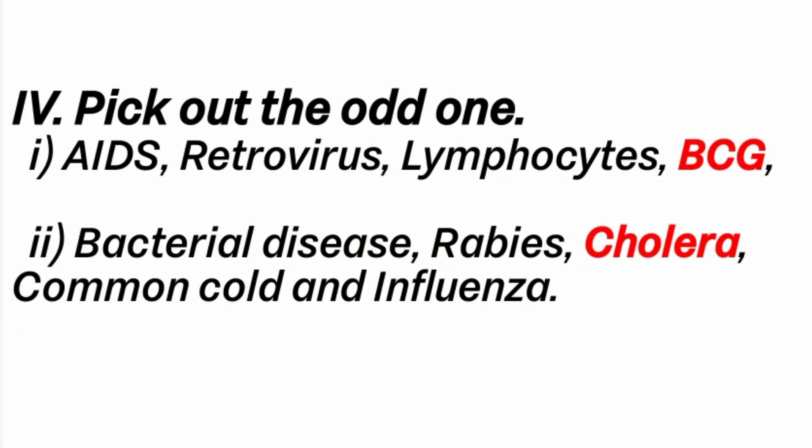4th part, pick out the odd one. 1st question: AIDS, retrovirus, lymphocytes, BCG. Answer is BCG. Because the remaining — AIDS, retrovirus, lymphocytes — are all related to HIV. HIV causes the disease AIDS, and HIV is also known as a retrovirus. HIV enters the human body and kills lymphocytes. That's why the answer is BCG, because BCG is a vaccine.